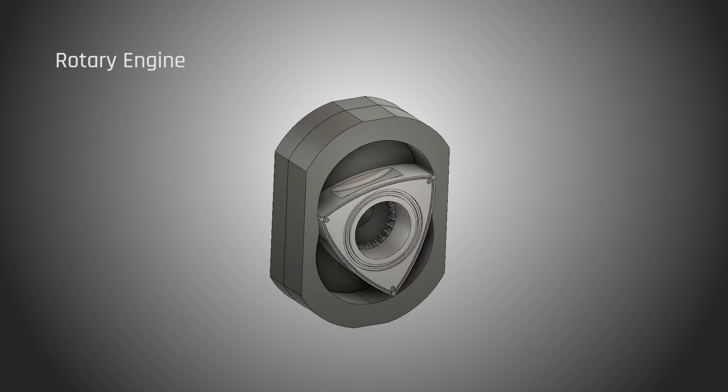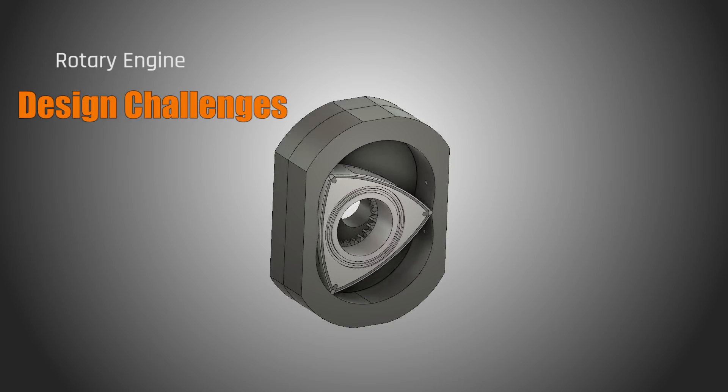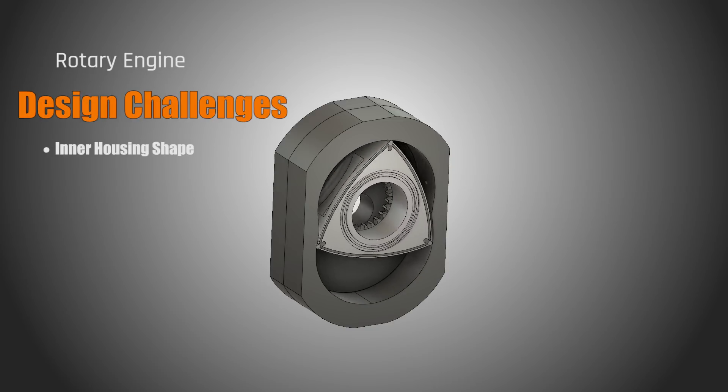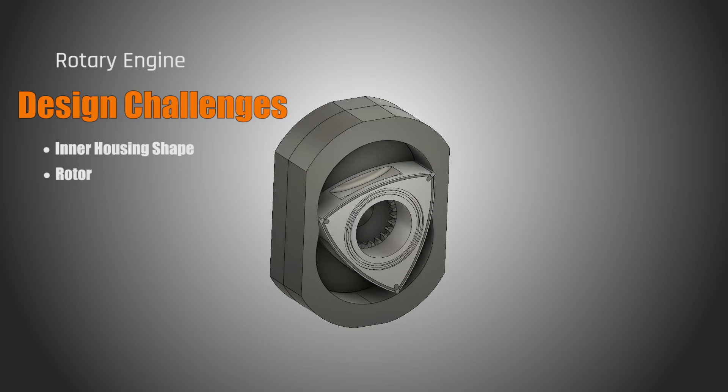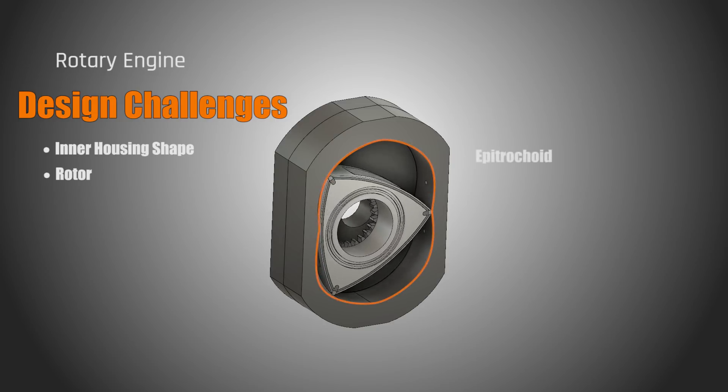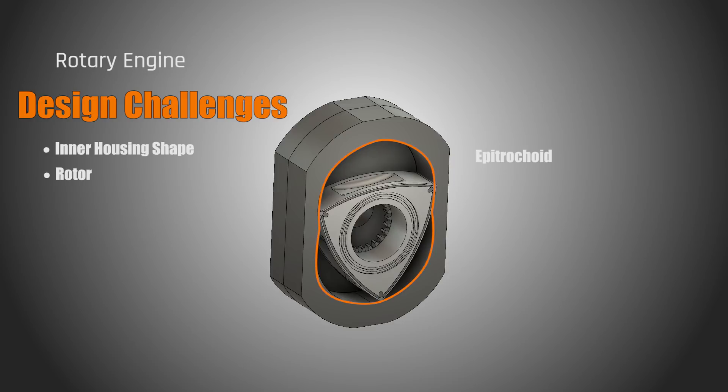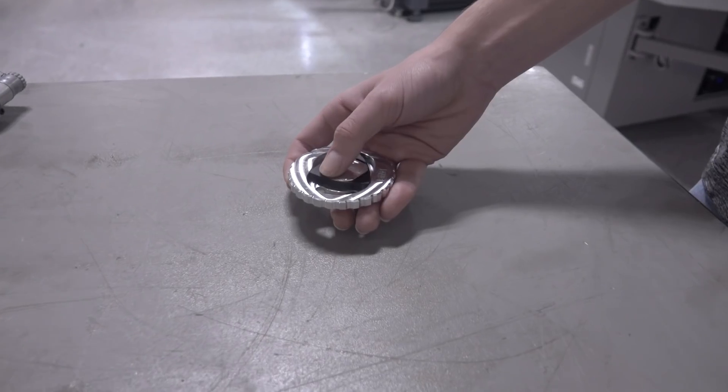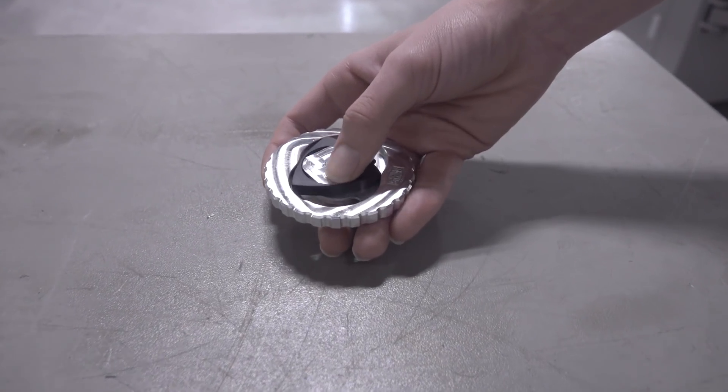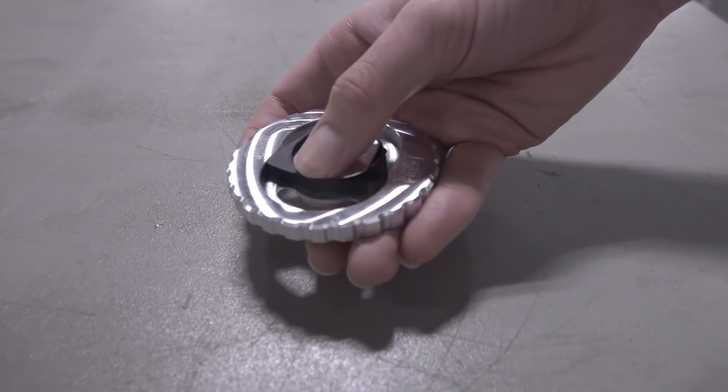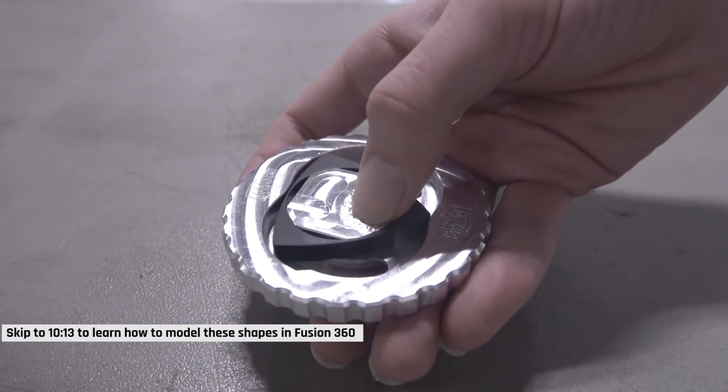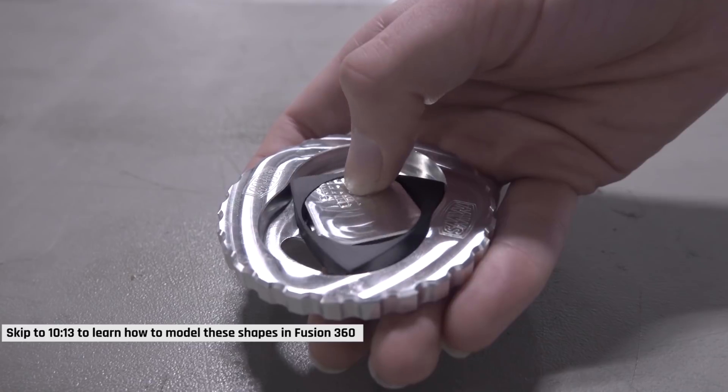One of the biggest design challenges with making a Wankel engine is creating the shape of the inner housing and the shape of the rotor. The shape of the housing is called an epitrochoid, and the shape of the rotor is similar to, but not exactly the same as, a Reuleaux triangle. The fidget spinner is a perfect project for this—it's going to allow me to learn how to create these shapes for our final design. So let's jump right into machining, and be sure you stay tuned because there is certainly more rotary engine content coming down the road.